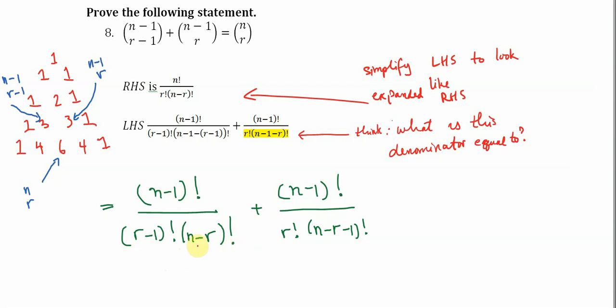Well, if you look at these two denominators here, let's look at the r part of it first. This one is an r factorial, and this is r minus one factorial. So if we want this denominator to be the same, we have to multiply it by r.